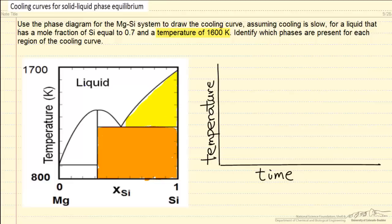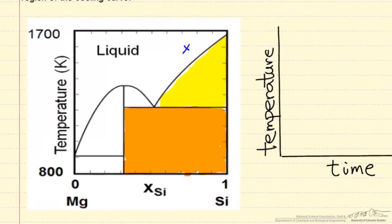We'll start with a liquid mixture at 1600 Kelvin and a mole fraction of 0.7, so that's right around here, that's our starting point. In order to understand the behavior, let's look at a couple regions.